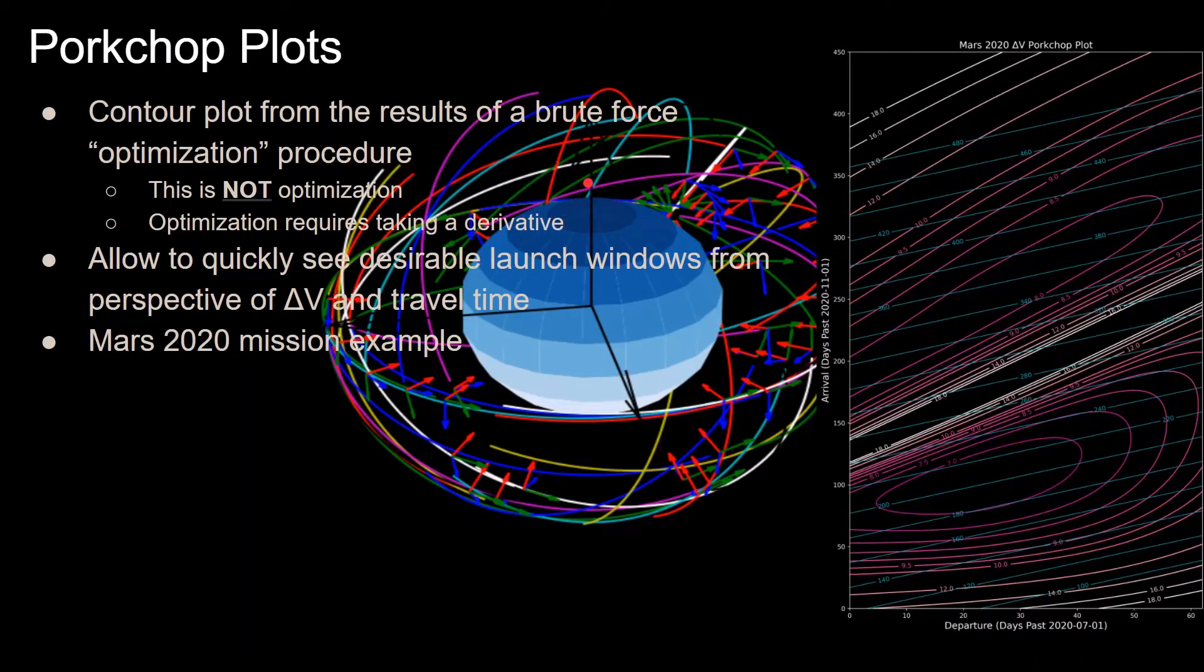For a definition of pork chop plots, they are contour plots from the results of a brute force optimization procedure. Notice I have optimization in quotes because brute force methods are not optimization. In order to do optimization, that requires taking a derivative and finding when a derivative is equal to zero. But the point of these pork chop plots is that they allow you to quickly see desirable launch windows from perspective of delta V and travel time.